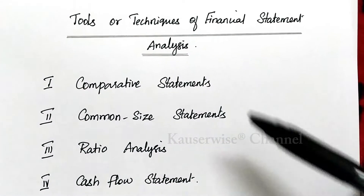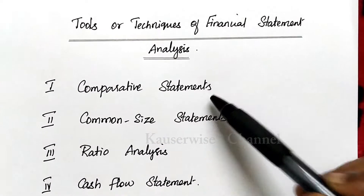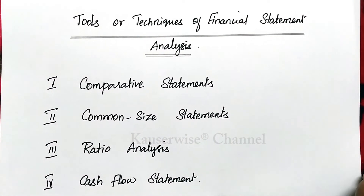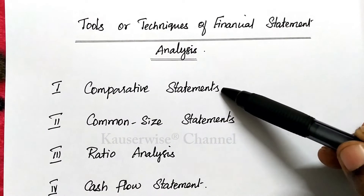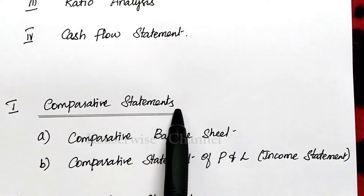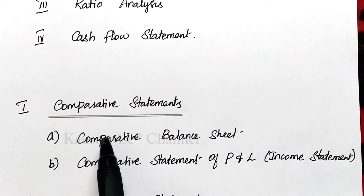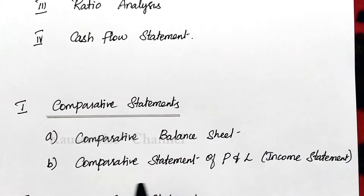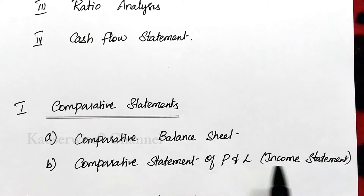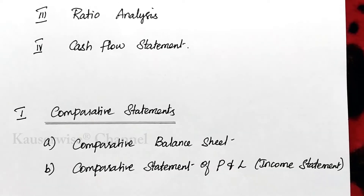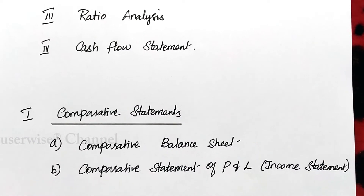Here we are going to see the first one, that is comparative statement. The remaining three we are going to discuss in the next videos. In comparative statements we have two divisions: the first one is comparative balance sheet, and the other one is comparative statement of profit and loss, that is income statement. First let us see the meaning of comparative balance sheet along with the format, then we will see the problem.